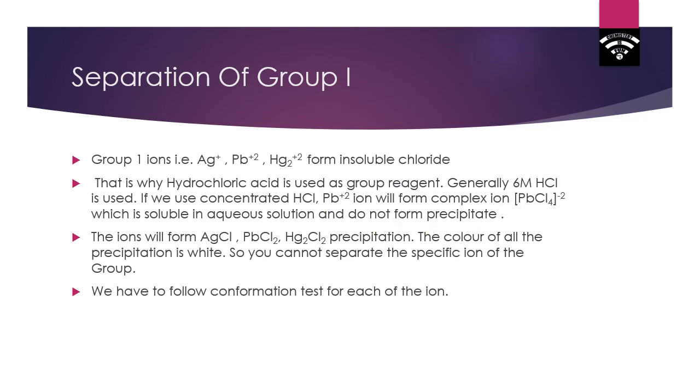Group 1 ions, that is Ag⁺, Pb²⁺, and Hg₂²⁺, form insoluble chlorides. That is why hydrochloric acid is used as the group reagent. We generally use 6 molar HCl.